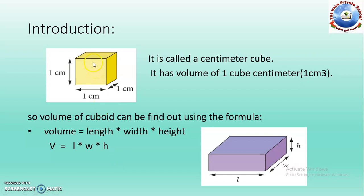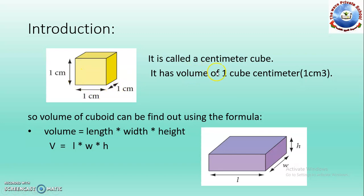First of all, just see this cube. Here length is given 1 cm, width is given 1 cm and the height is given 1 cm. So we can say that it is called a cm cube in which length, width and height are all given. It has a volume of 1 cubic cm — 1 cm for length, 1 cm for width and 1 cm for height.